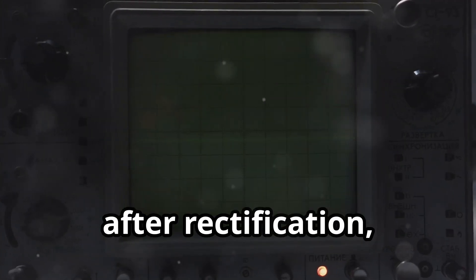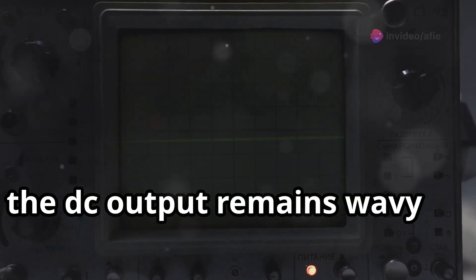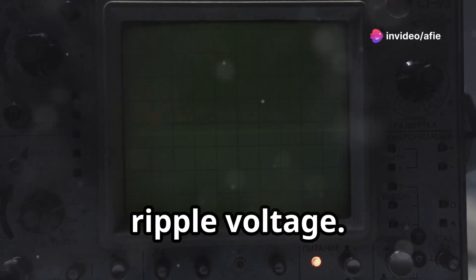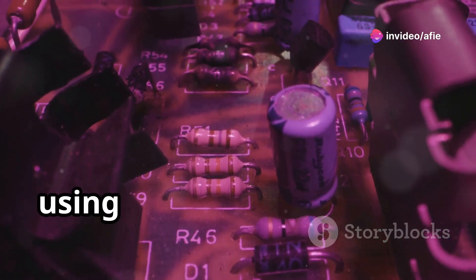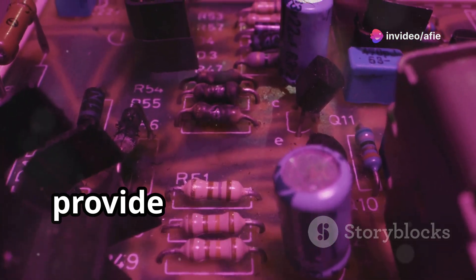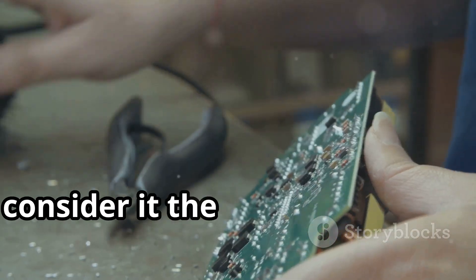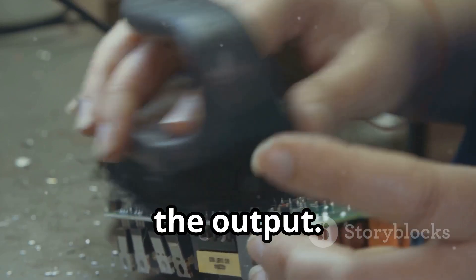Third, we have the filter. After rectification, the DC output remains wavy or having a ripple voltage. The filter smooths it out, using capacitors to reduce ripple and provide a more stable DC output. Consider it the component that stabilizes the output.